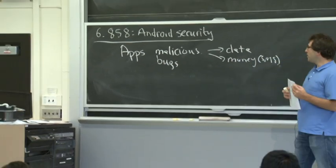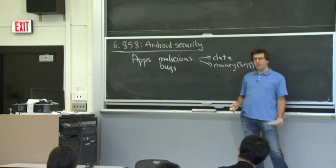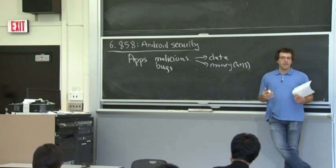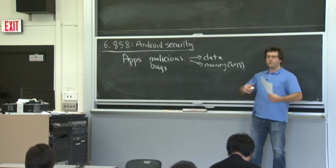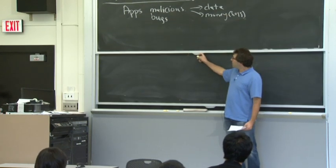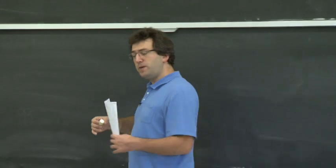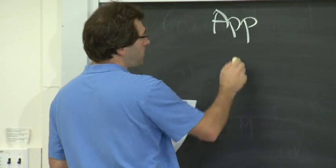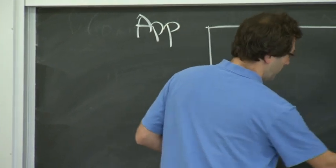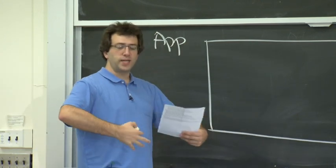One way to protect data from malicious applications is to understand what an application looks like in Android, then talk about how permissions are configured and enforced. Android applications are quite different from desktop apps or web applications. Instead of being a monolithic piece of code with a main function, they're much more modular. An Android application is a collection of components, and the framework provides four kinds of components for the developer to think in terms of.